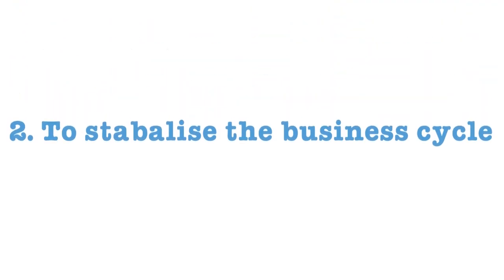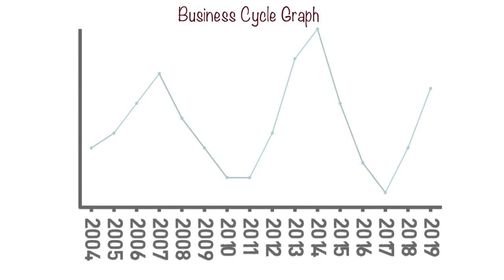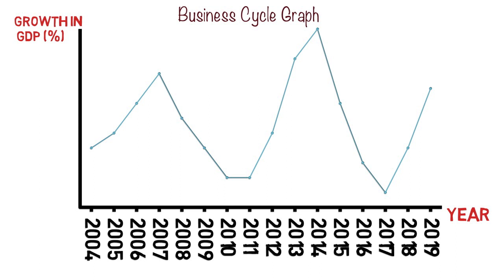Number two is to stabilize the business cycle. We've seen in a previous video that traditionally economies grow in spurts — we have peaks in growth and troughs as well. Some years are good, some years not so good, and we have this cycle of growth over time.